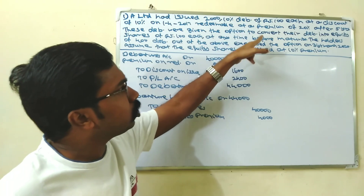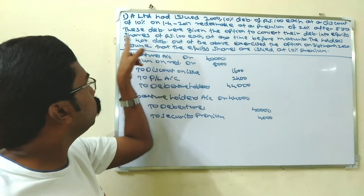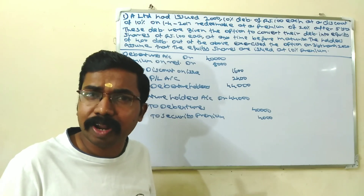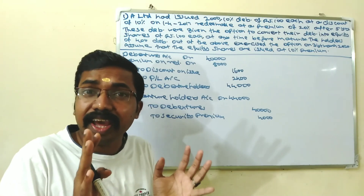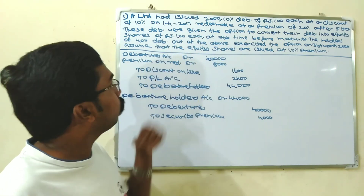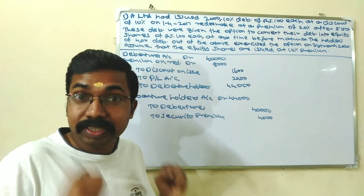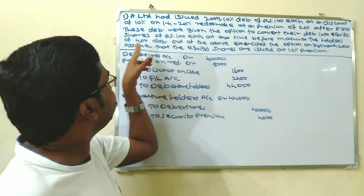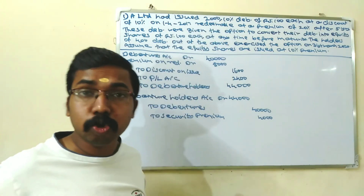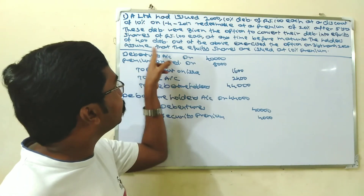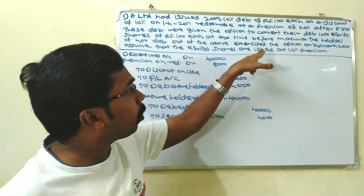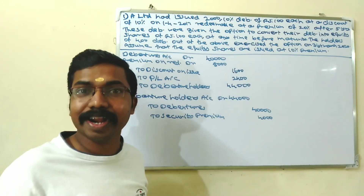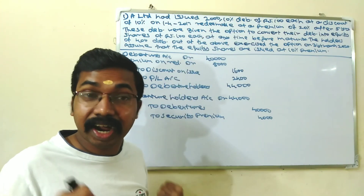These debenture holders were given the option to convert their debentures into equity shares of ₹100 each at any time before maturity. The holders of 400 debentures, out of the total issue of 2,000 debentures, exercised the conversion option on 31st March 2020.